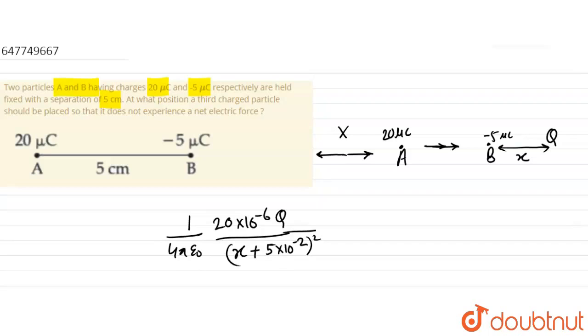The electric field due to the 5 microcoulomb charge: 1 by 4 pi epsilon 0, times 5 into 10 to the power minus 6, times Q upon distance x squared. Here is the force formula: 1 by 4 pi epsilon 0, Q1 Q2 upon R squared.